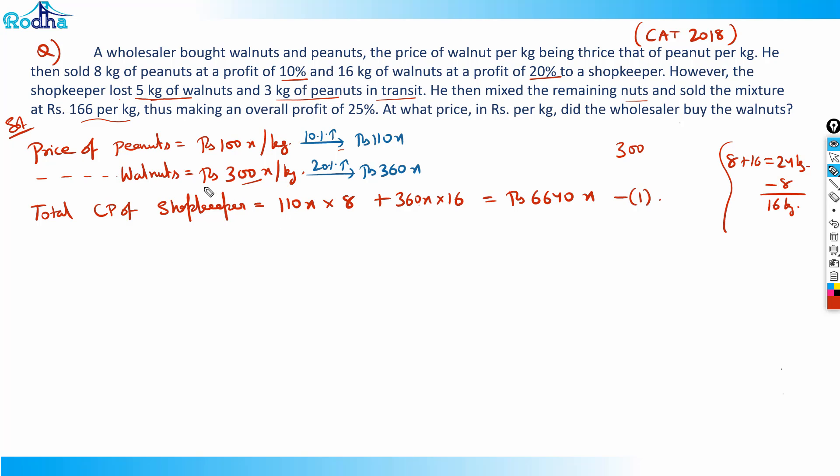The total selling price of shopkeeper will be 166x into 16, which equals 1660 plus 996, which is Rs 2656x.